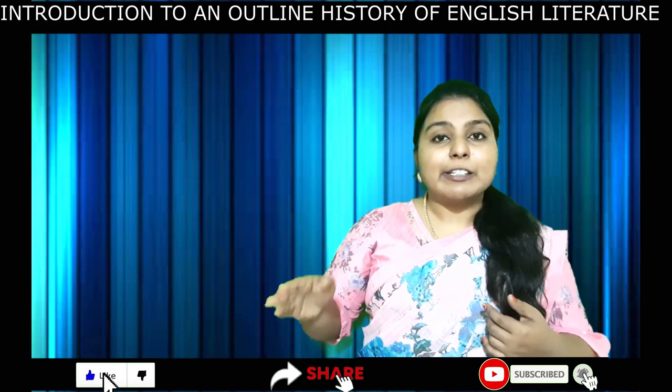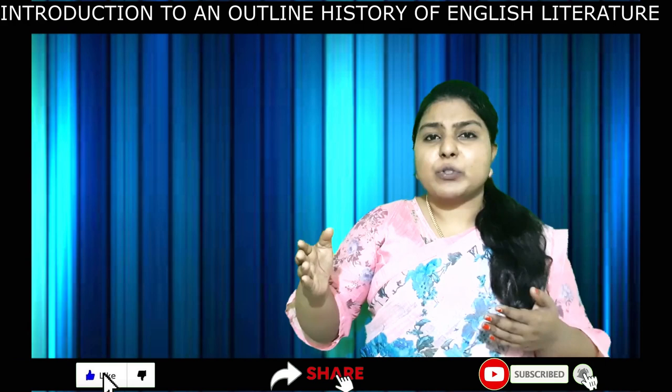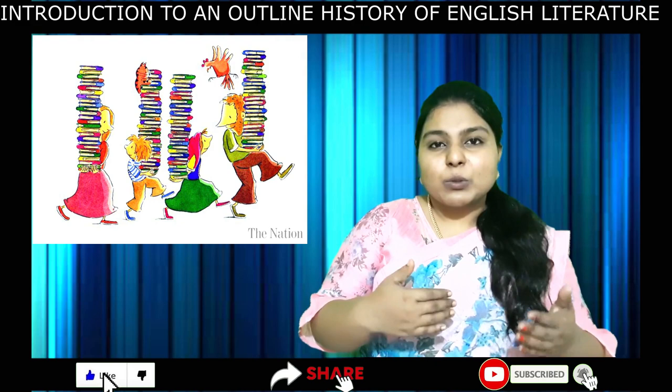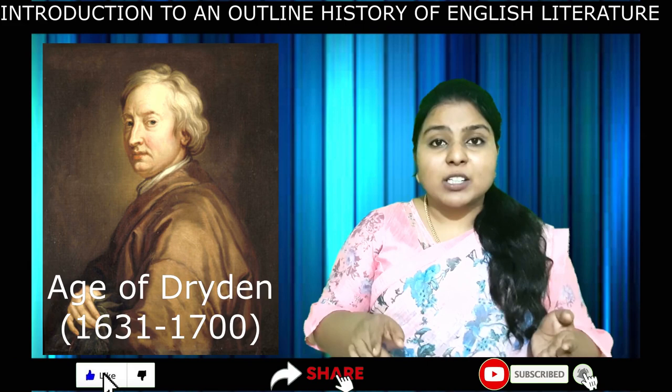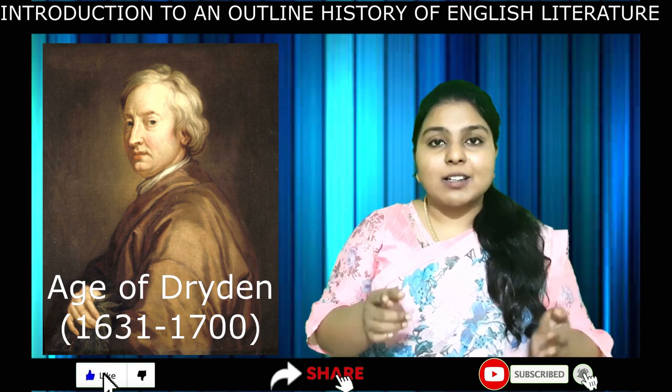Apart from this, history is just a continuous flow of events — we have no end, no beginning. These ages keep on overlapping. You can see Dryden was 43 years old when Milton died, and after that he lived only for 26 years. Still, we learn the Age of Milton separately and the Age of Dryden as a completely different era.